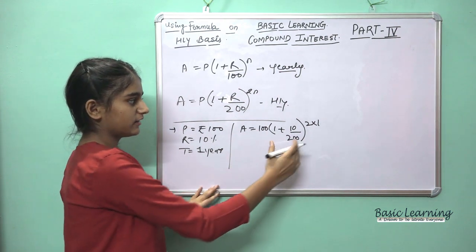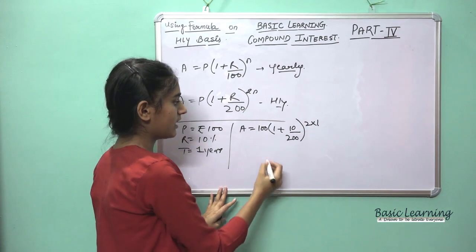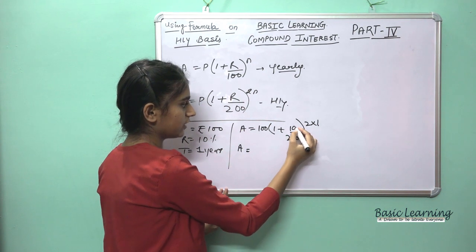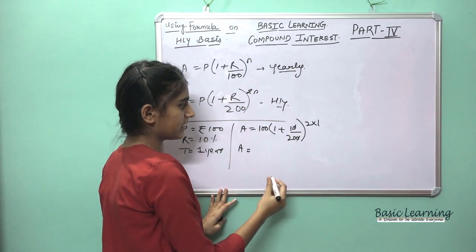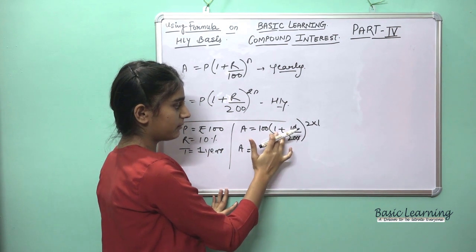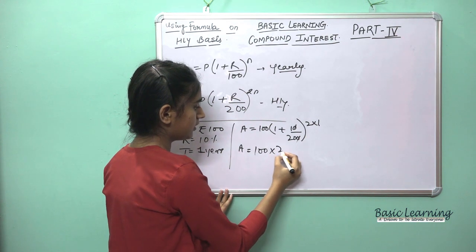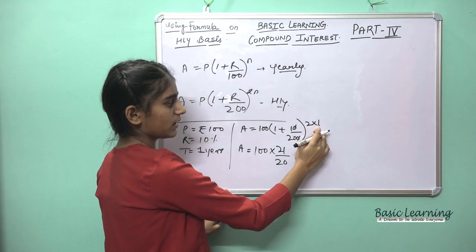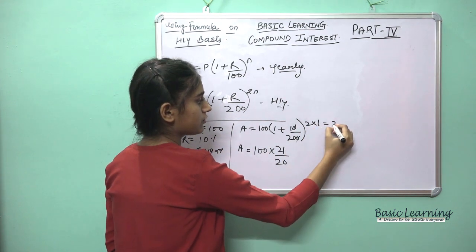We can cancel zeros and take the LCM: 20 ones are 20, plus 1 gives 21. So the bracket becomes 21/20, and the power is 2 × 1 = 2.